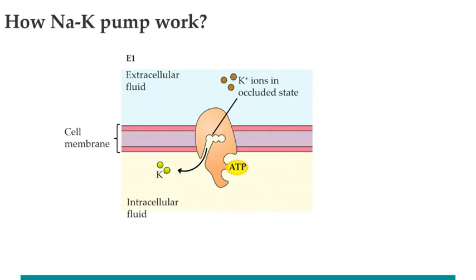The pump is actually quite fast — it can perform this entire cycle around 400 times per second. However, it is still much slower than a potassium channel, through which around 200 million ions per second can flow.